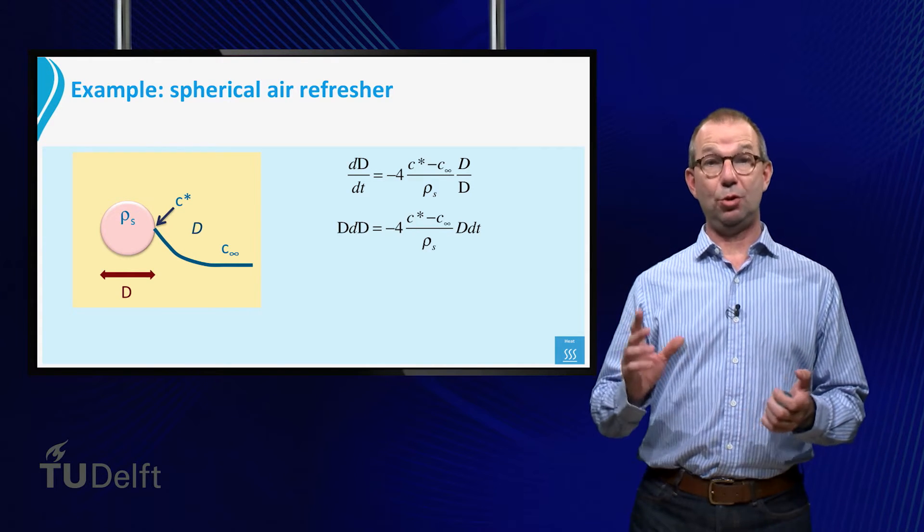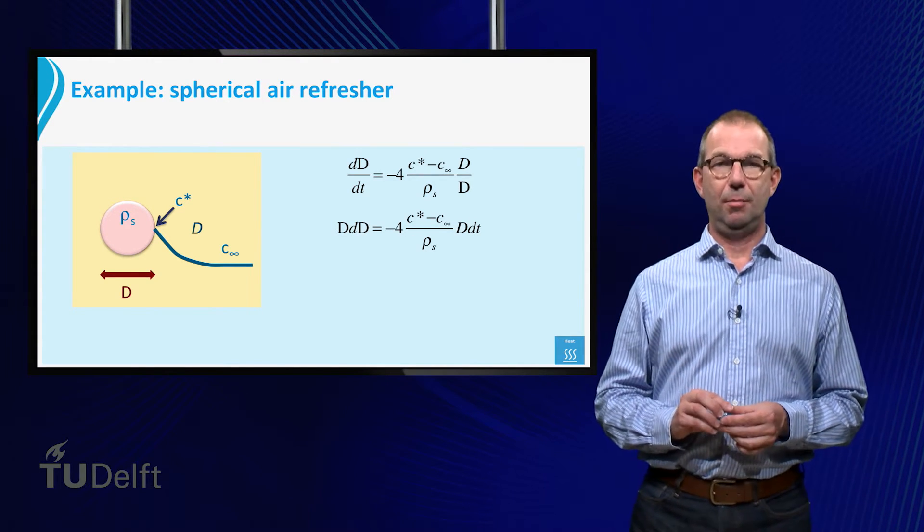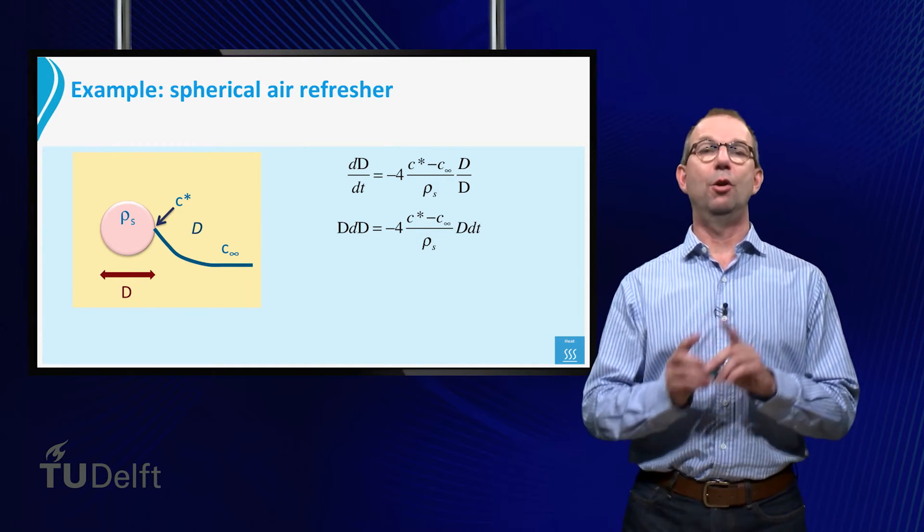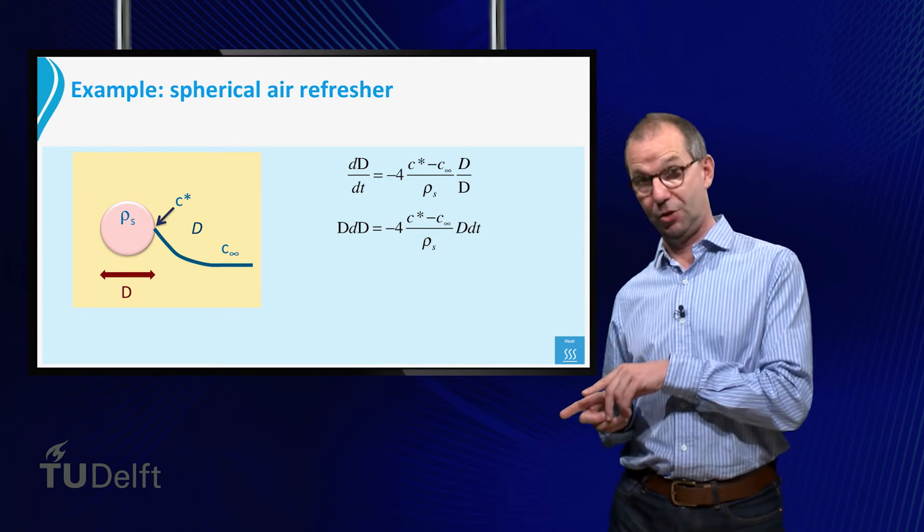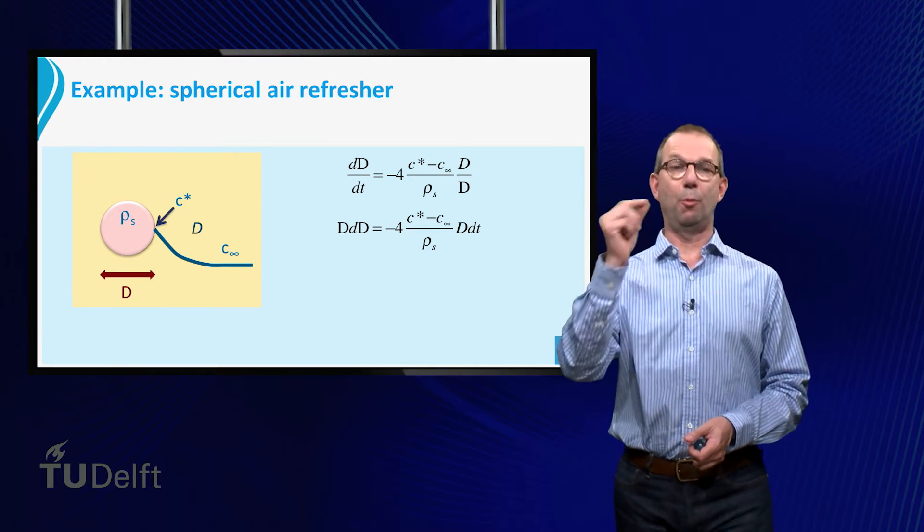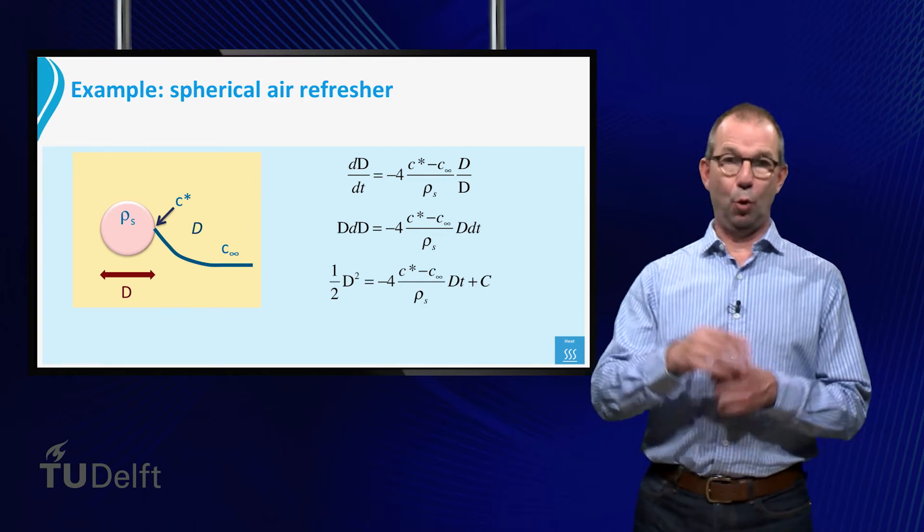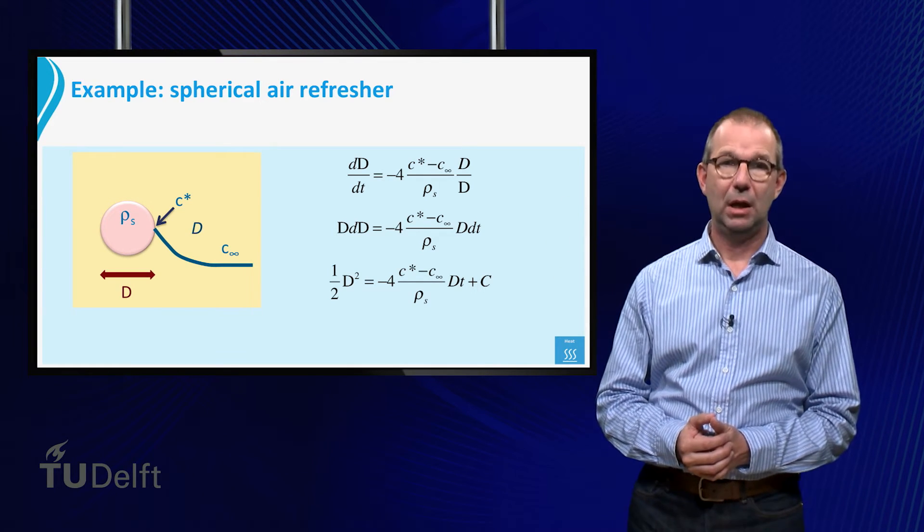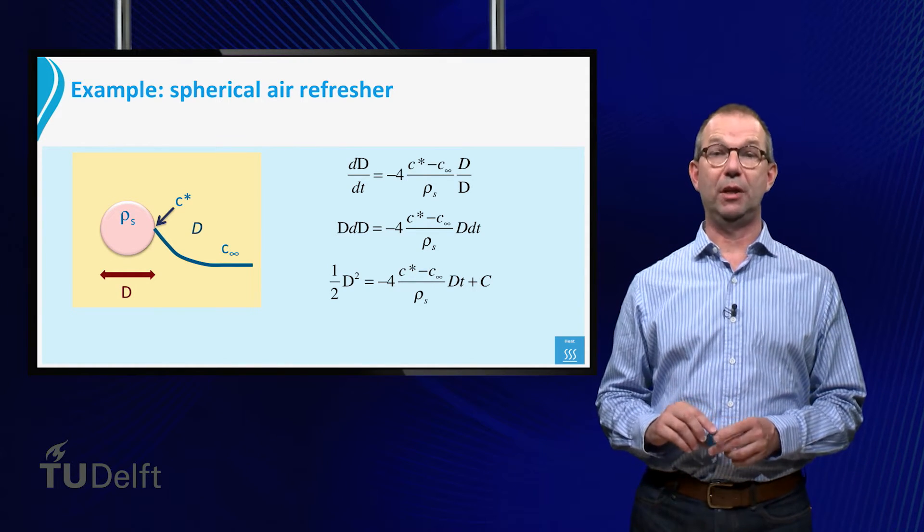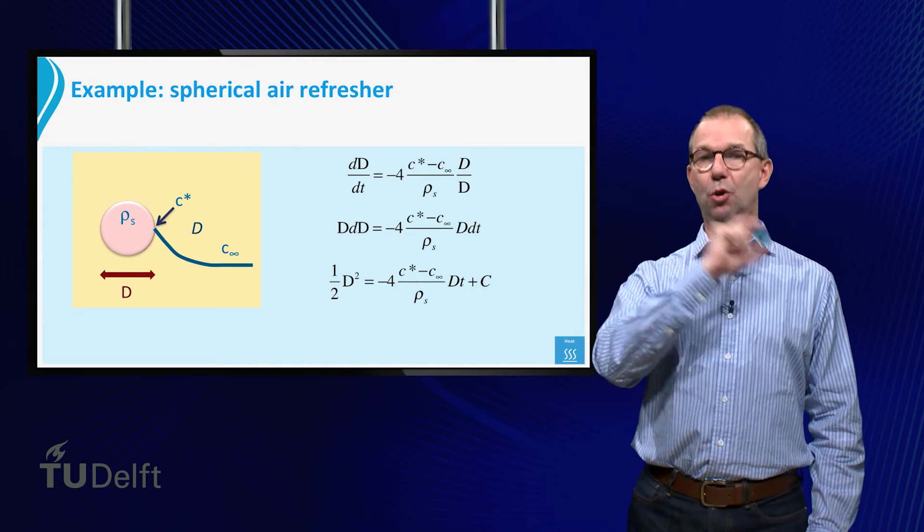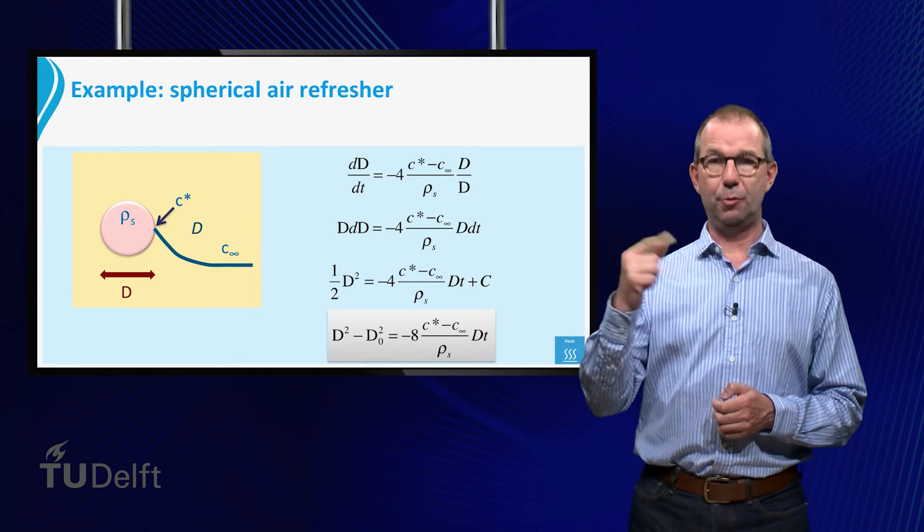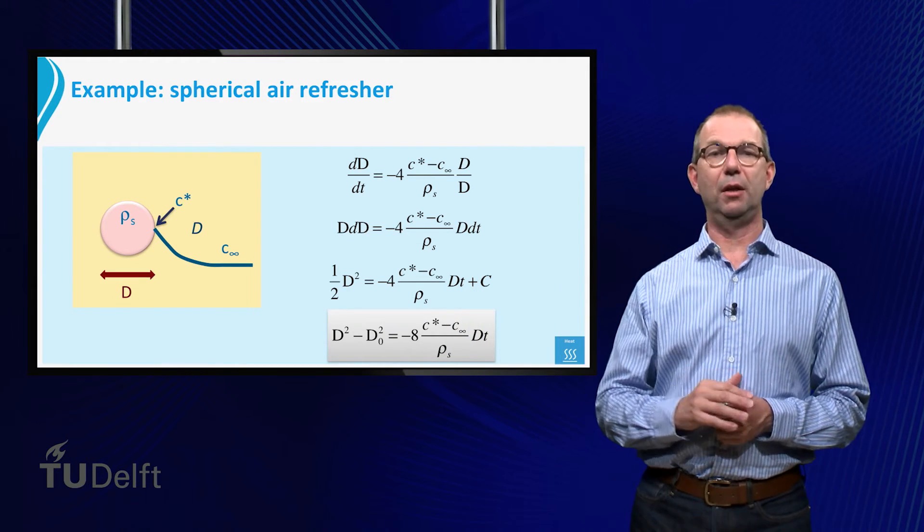Next, we need to solve this equation. This can be done by separation of variables. Everything with the diameter D goes to the left, everything else to the right. Integration of this equation gives half D squared is proportional to time. And we of course get an integration constant. We can find this integration constant by giving the initial diameter of the sphere. At t equals zero, the sphere has a known diameter D sub zero. From this we get the final answer of the decrease of the diameter in time, as shown in the final equation.